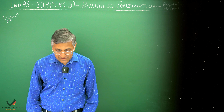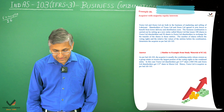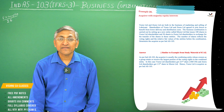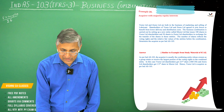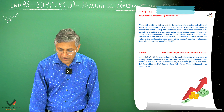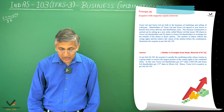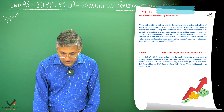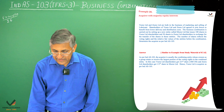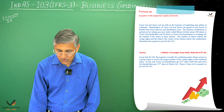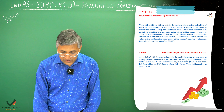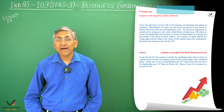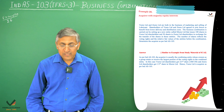Next, we have Example 26, also from the Study Material of ICAI. In this question, it is given that Vira Limited and Gira Limited are both in the business of marketing and selling of lubricants. Shareholders of Vira Limited and Gira Limited agreed to join forces to benefit from lower delivery and distribution costs. The business combination was carried out by setting up a new entity called Mira Limited, which issued 100 shares for Vira Limited shareholders and 50 shares for Gira Limited shareholders in exchange for the transfer of their existing entities. Determine the acquirer as per Ind AS 103.